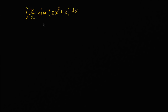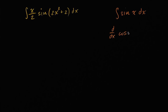Let's see what is going on here. I have this x over two, and then I have sine of two x squared plus two. Now if I were just taking the indefinite integral of sine of x, that is pretty straightforward. We know that the derivative of cosine of x is equal to negative sine of x. So if I take the derivative of negative cosine of x, that's going to be positive sine of x — so the antiderivative of sine of x is just negative cosine of x.